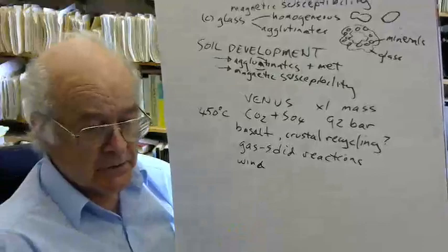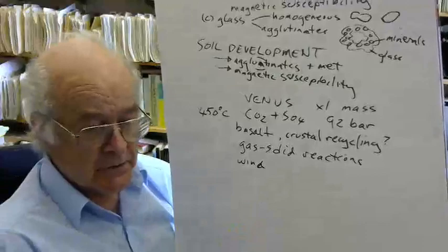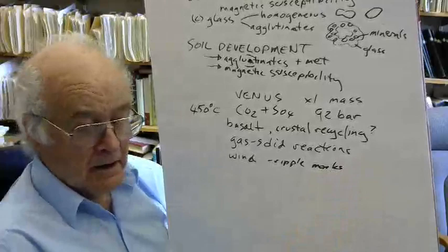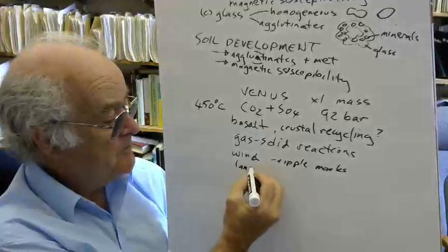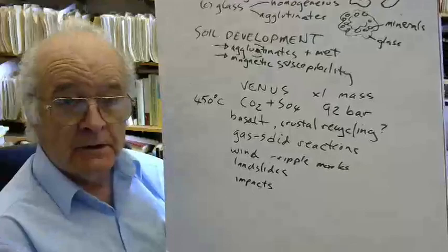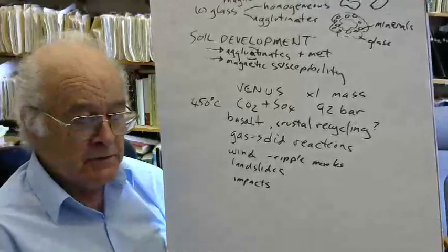There is wind. We see evidence of wind deposition and erosion. There do appear to be ripple marks in places. And there's some evidence also of landslides and also big impacts. They're all big, the impacts we have on Venus, because even an asteroid the size of a football won't make it to the surface. It'll burn up in the atmosphere.